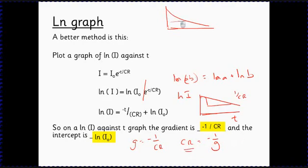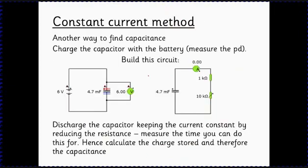Another thing just to mention quickly in this is that all of this was quite hard and there is a method called a constant current method. What we do in this is we charge the capacitor up and once we've got it charged we can discharge it through this circuit. So this is initially charged to a voltage, let's say six volts, we put it in this circuit and we know that what we're expecting is to get a graph of I against t.